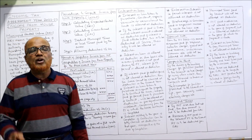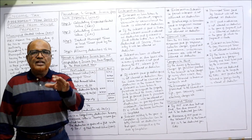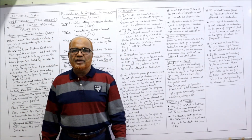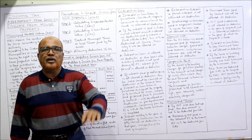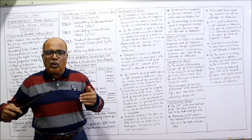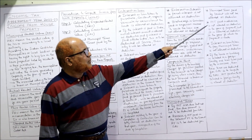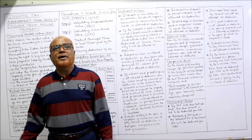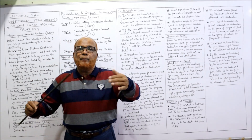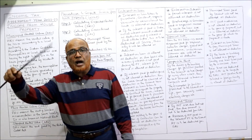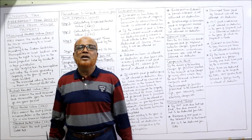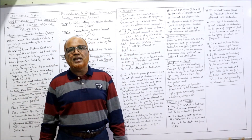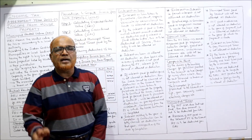Municipal taxes paid in advance are not allowed as a deduction in the year of payment; they are allowed as a deduction in the year for which they are applicable. For example, if you pay next year's municipal taxes during the current year, that advance payment is not deductible in the current year but will be deductible in the next year.